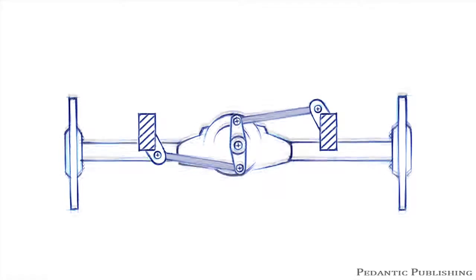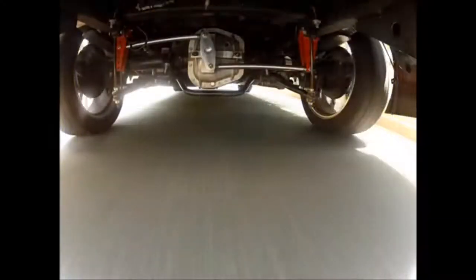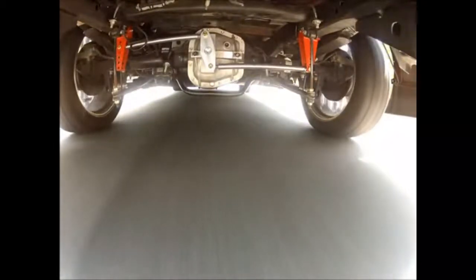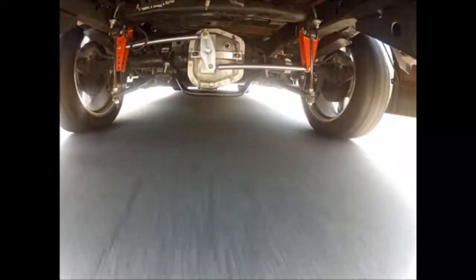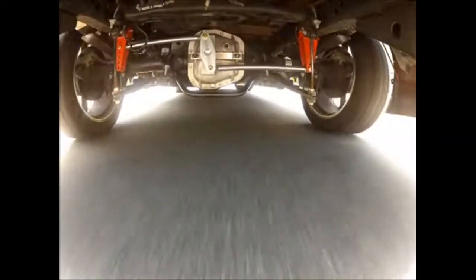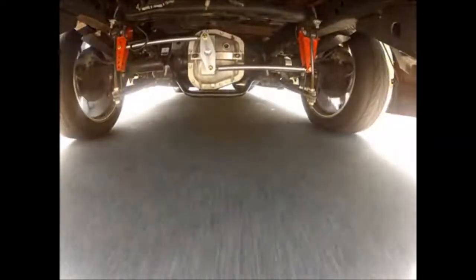There are other live axle systems for you to explore. Shown here is the watts link. A swivelling arm is attached to the centre of the differential. From here two arms travel outwards to the chassis, the mounting points shown here in red. This geometry limits side to side lateral movement.